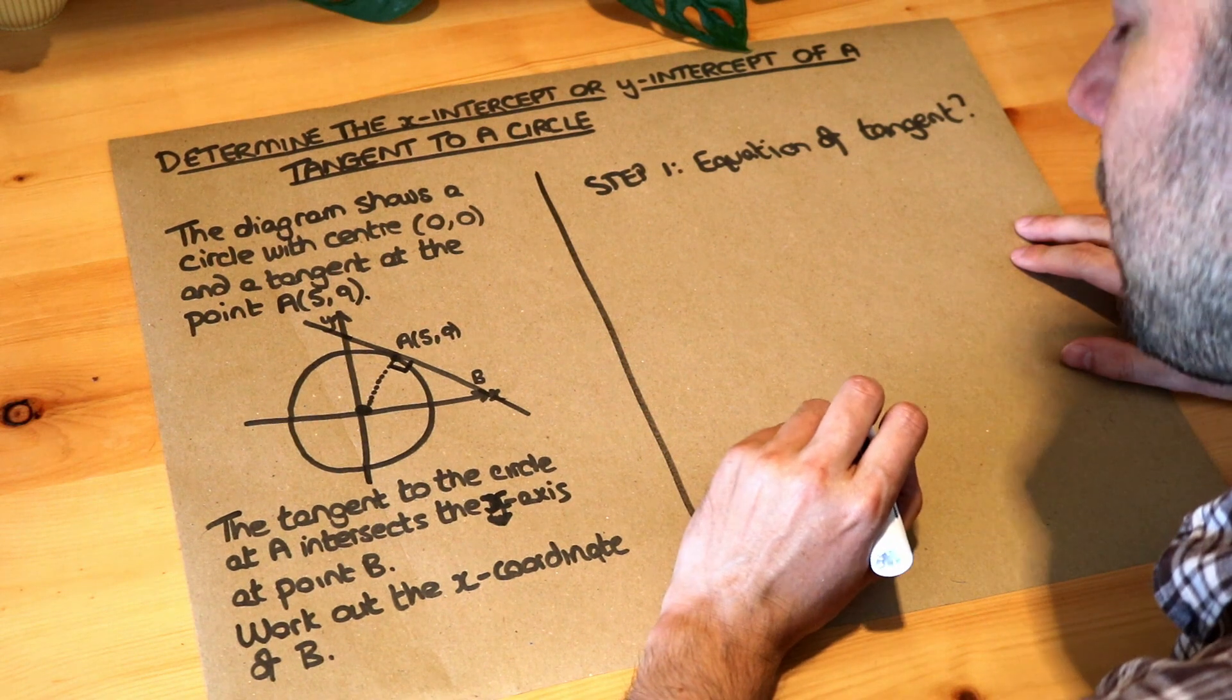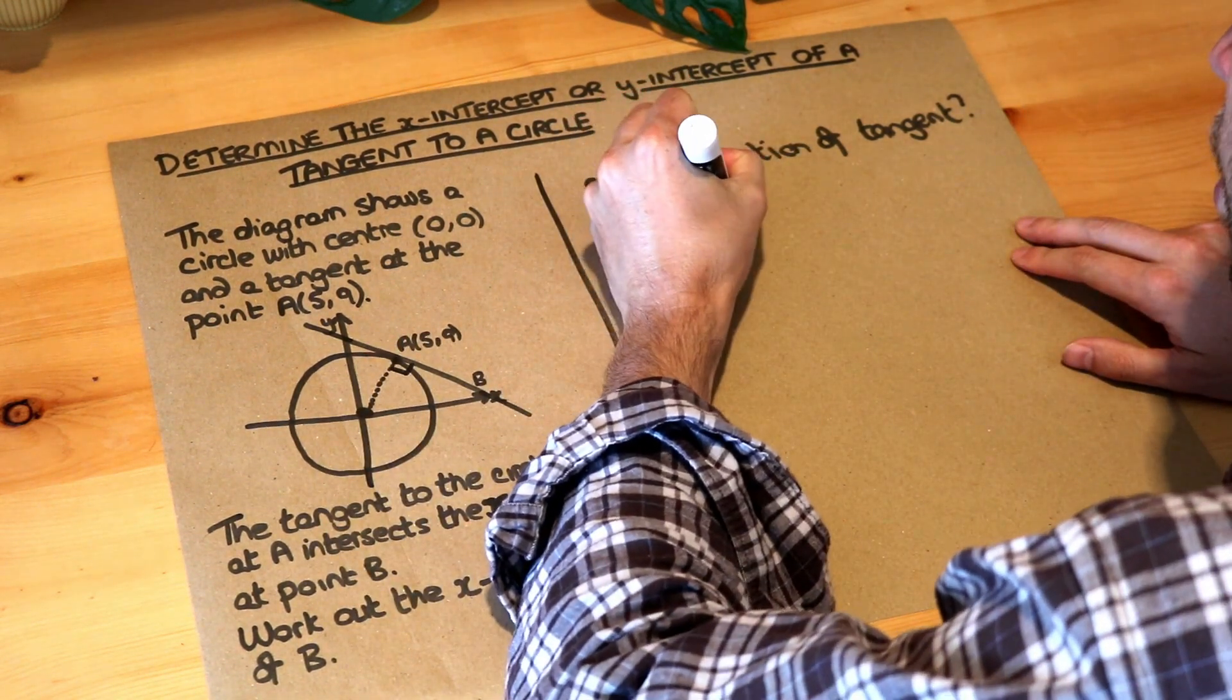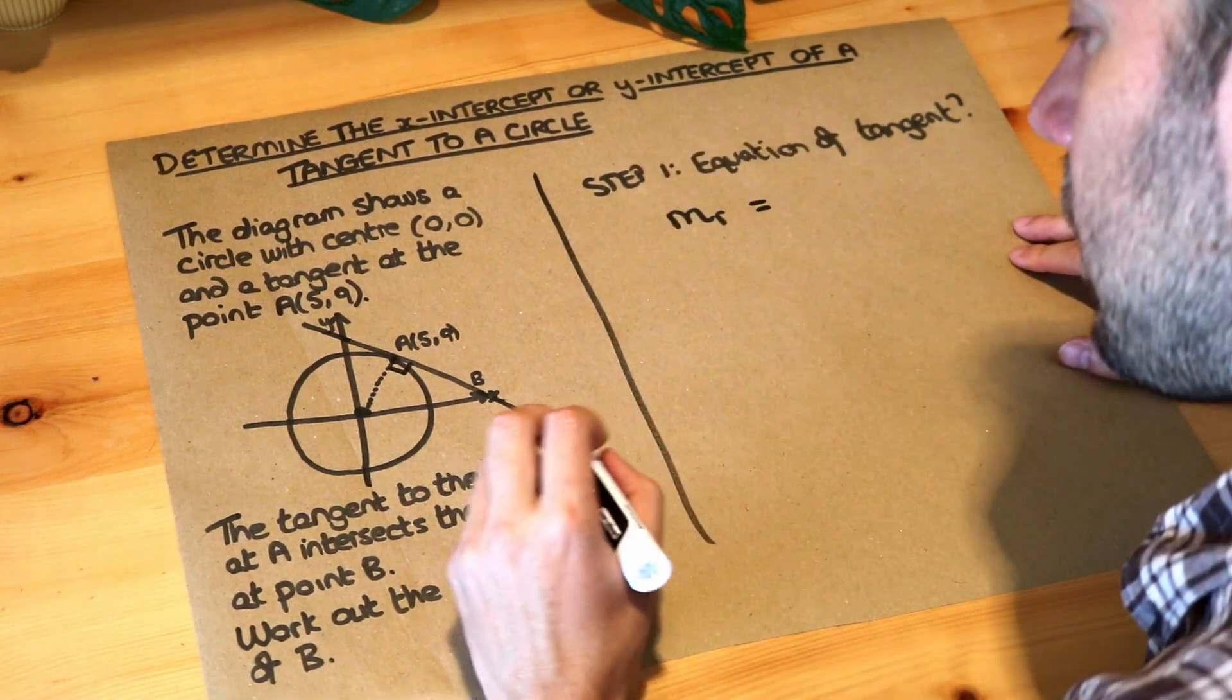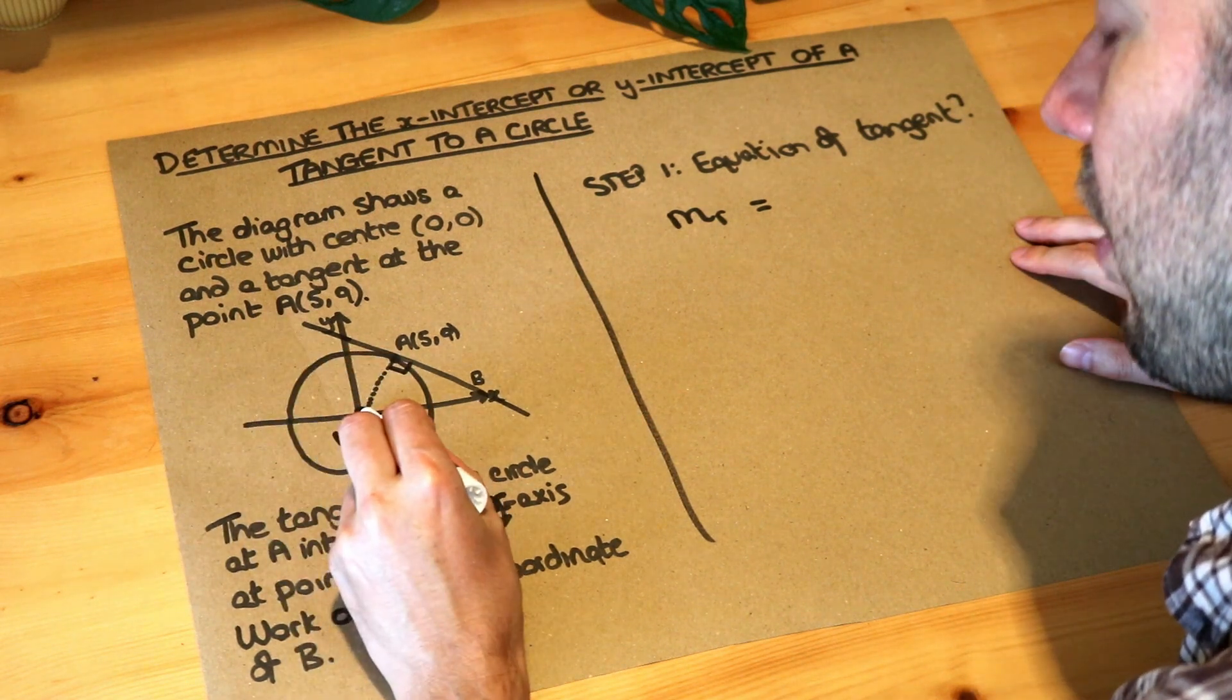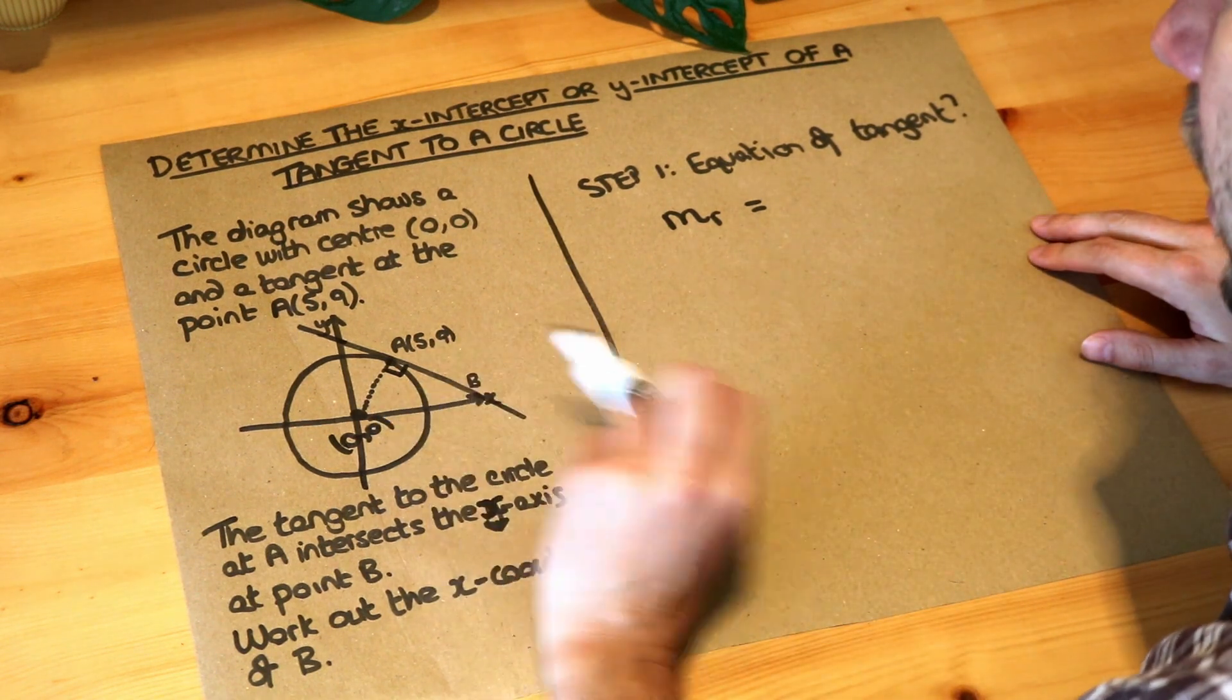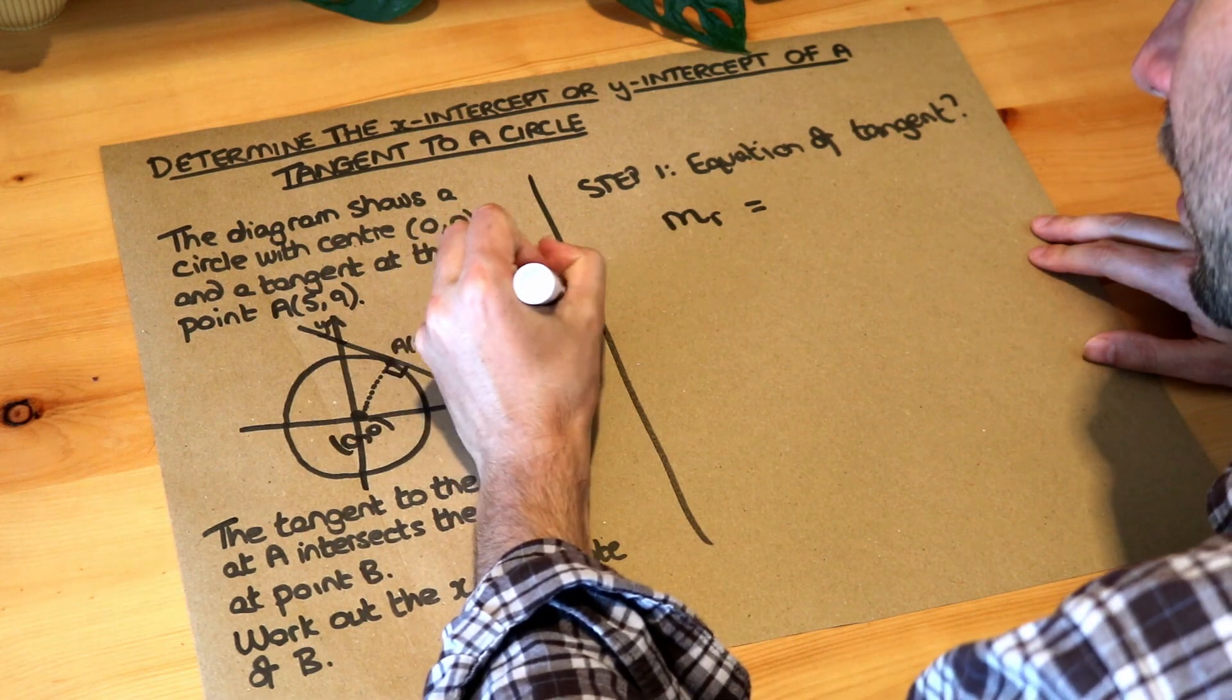So what we did is we found the gradient of the radius first. So I'm going to put m_r, just to mean the gradient m of the radius. If you think about it, if we have two points, (0,0) here and (5,9) here, the gradient is just a change in y over the change in x. So the change in y, if I just write those two points here, (0,0), (5,9)...